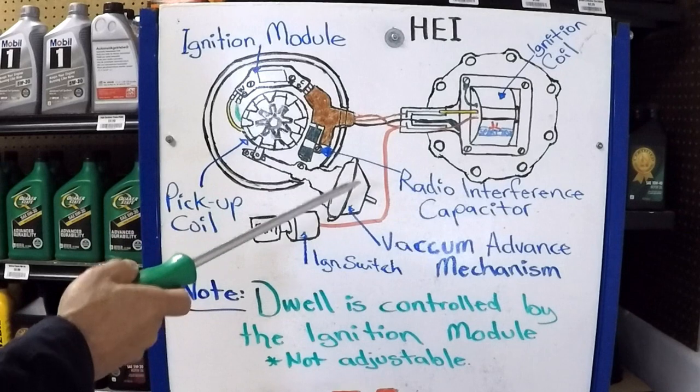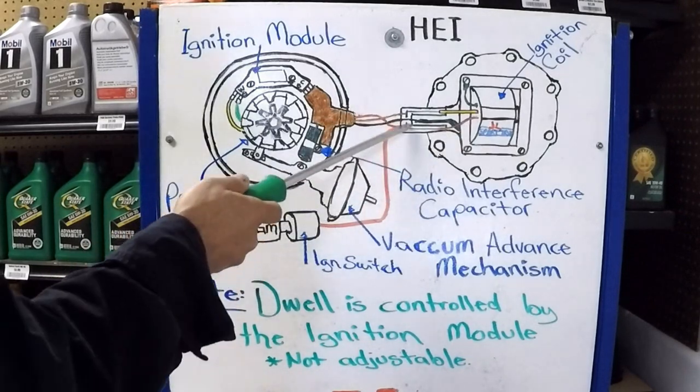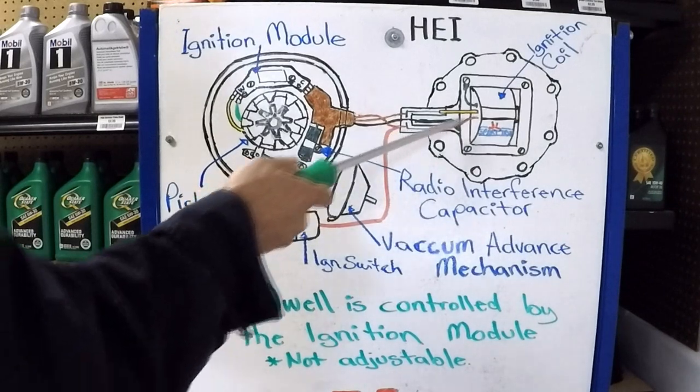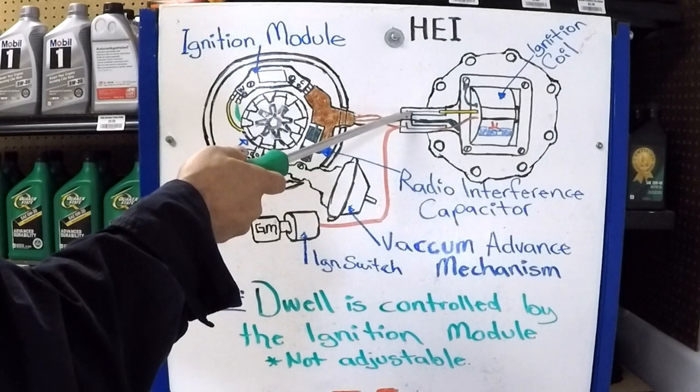Now, let's move on to some basic troubleshooting. Let's say you don't have spark. And first thing you've got to do, make sure you're receiving power right here. You turn the key on. That way you know that the ignition coil is receiving power.